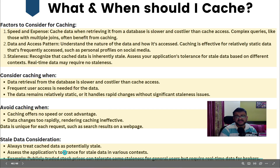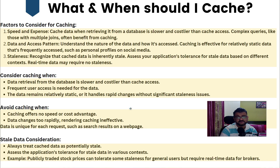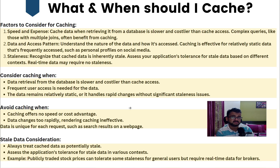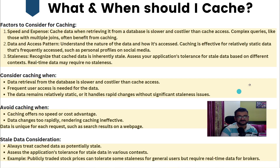Always treat cached data as potentially stale. For example, in a stock trading company, prices can change every second — staleness cannot be afforded. You need real-time numbers from brokers to take a trade, so you should not be caching stock prices at all, as that would lead to bad outcomes.